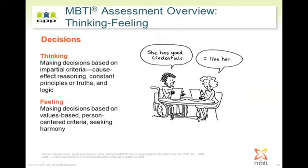The next cartoon moves on to the third theme: how do you make decisions? Is it through logic, analysis, impartiality, and consequence-based thinking? Or could it be that you draw conclusions from personal values and things such as empathy and harmony of feeling? You can see two folks arriving at a conclusion sitting at the table through different methods.